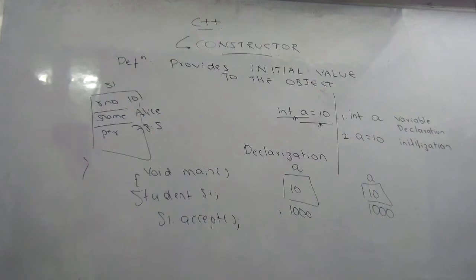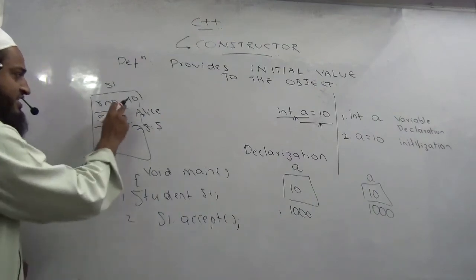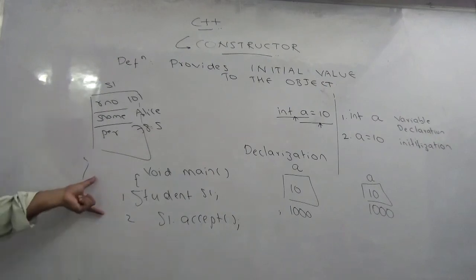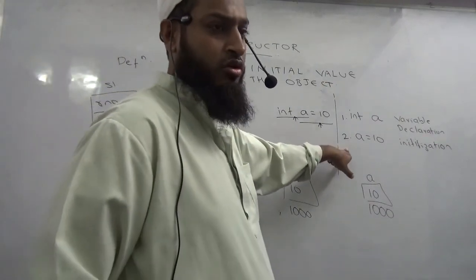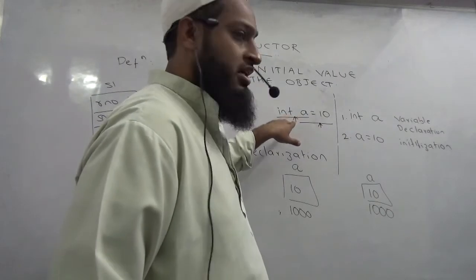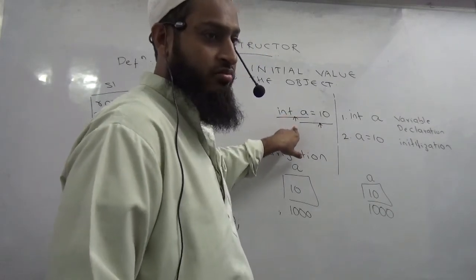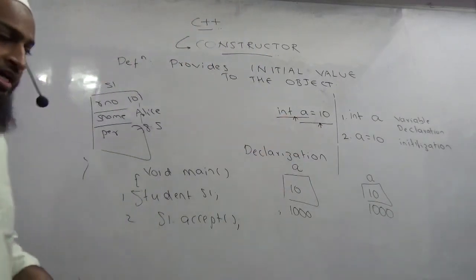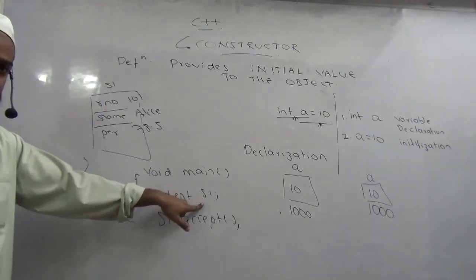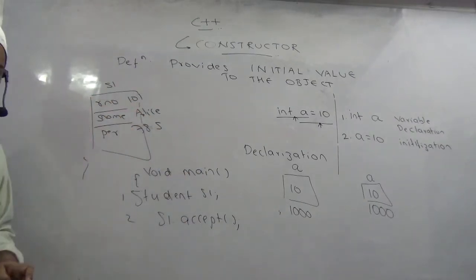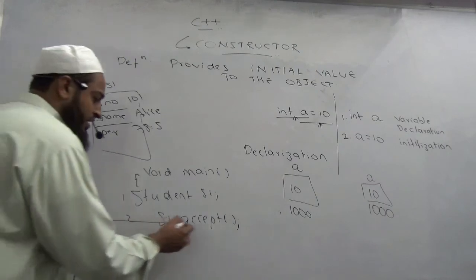So how many lines are we taking to have sensible values in the object? Two. So we are using this style which is slow. We want to use this style which is fast. Means what? As soon as the object is created, it should have these values. So I should be skipping this line.